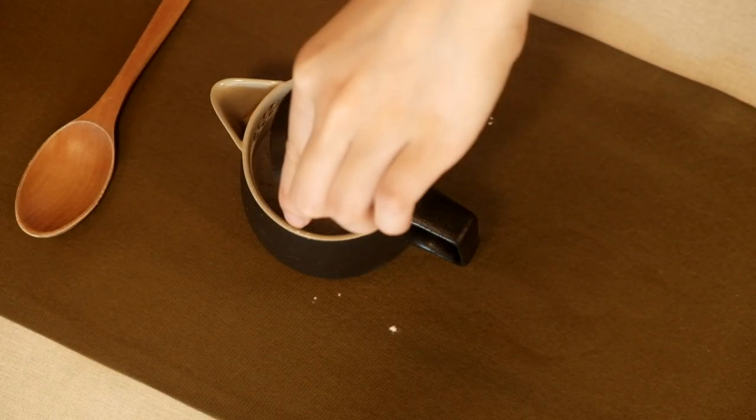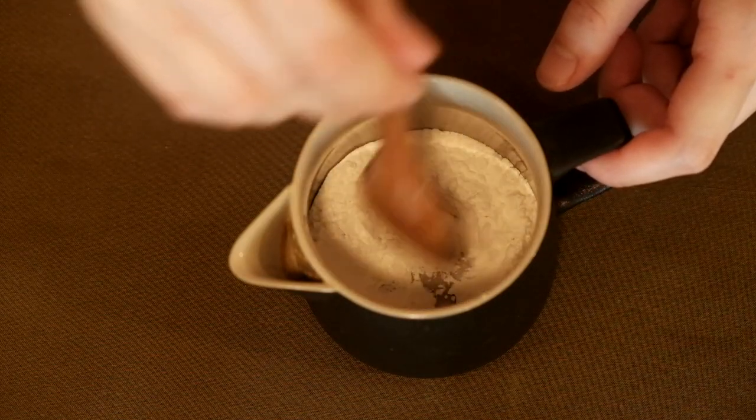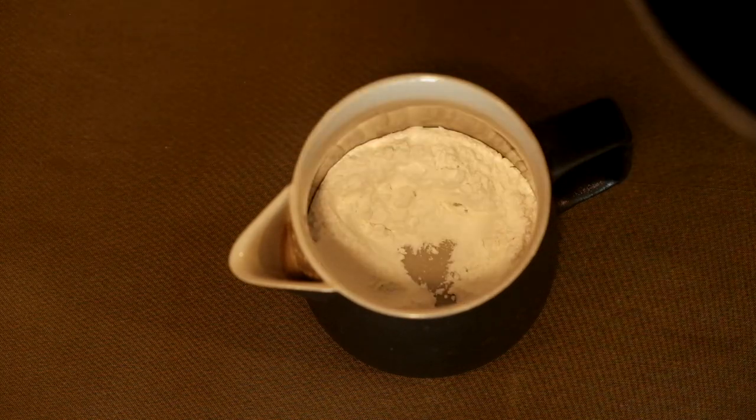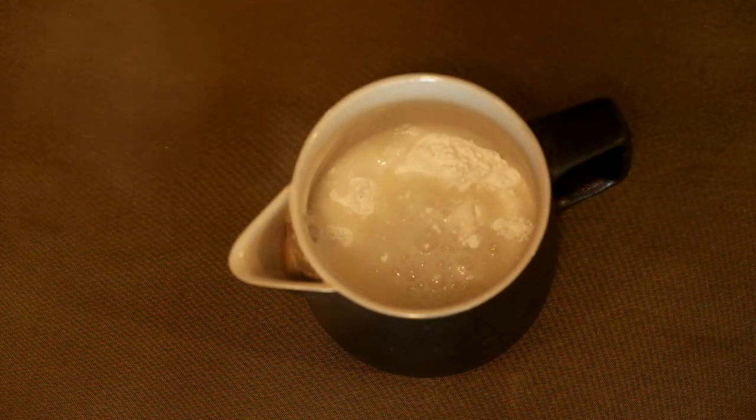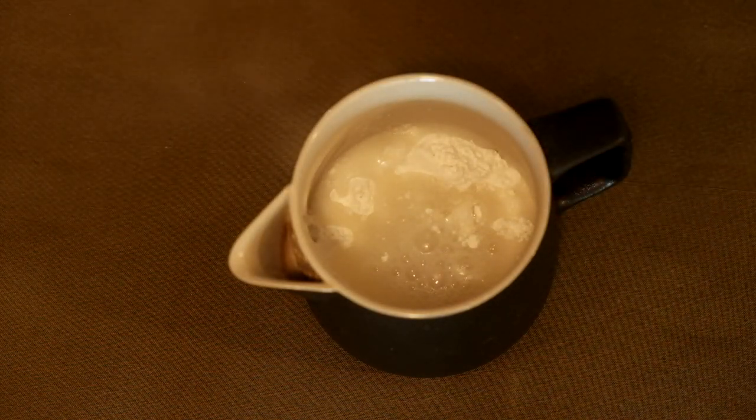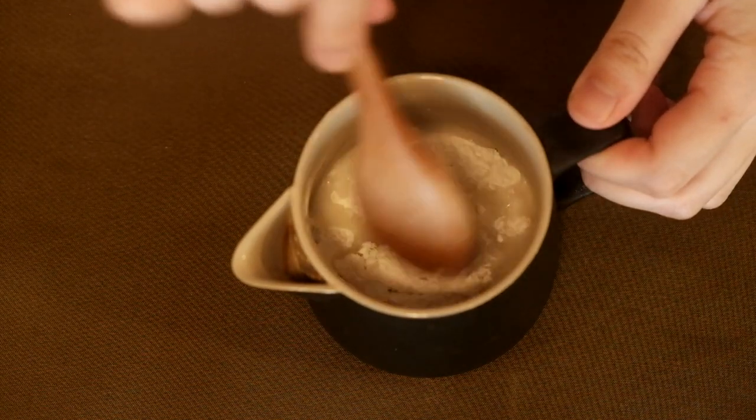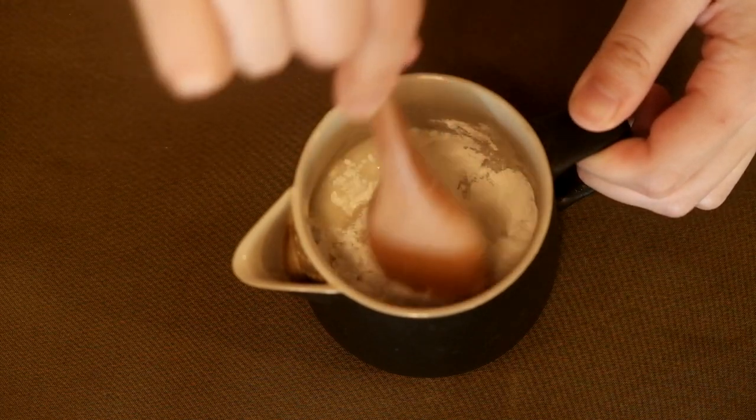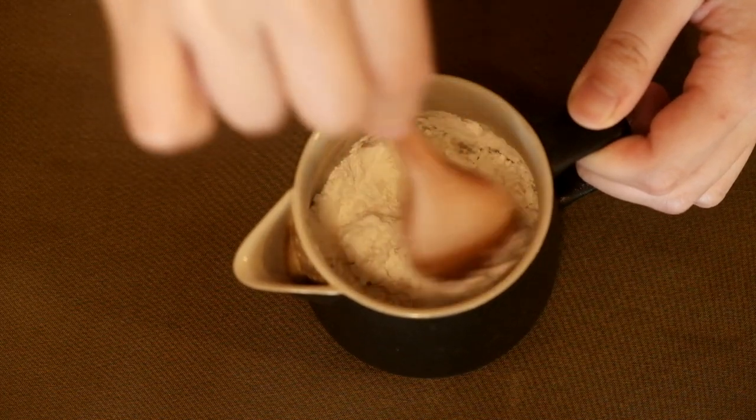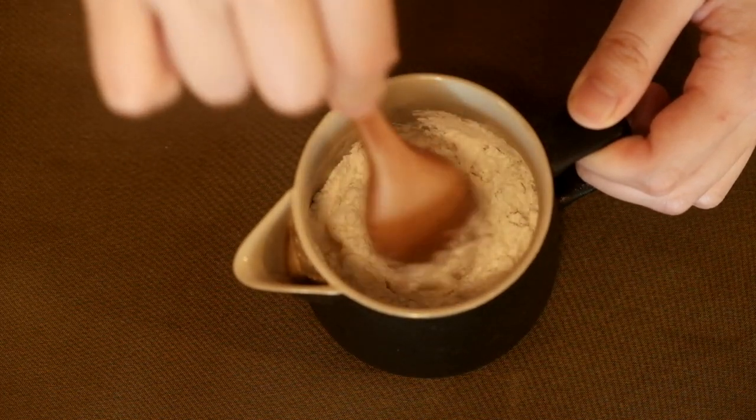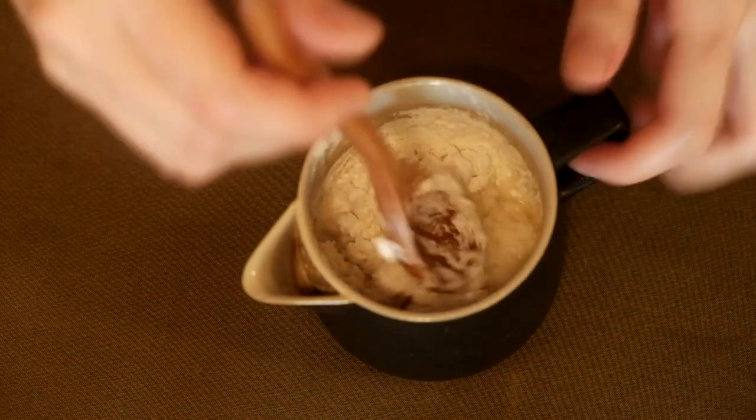Pour the flour into the cup. Leave some open space in the middle and add a little bit of boiling water in there. Let it sit and soak through for a minute or so and mix the flour with the water. Some of the flour is already cooked by the hot water, but the rest is still pretty dry. Keep adding more water a little bit at a time until the flour becomes a big chunk of dough.